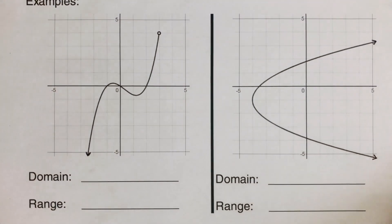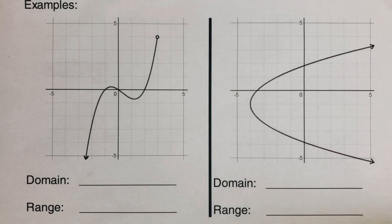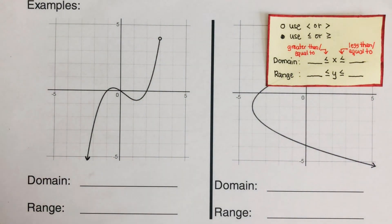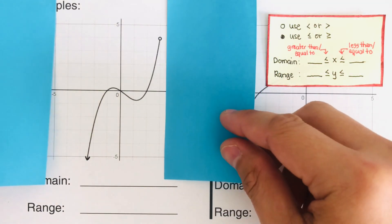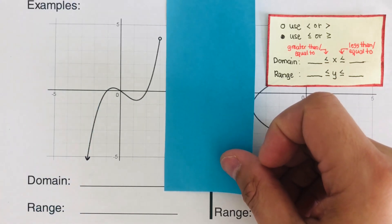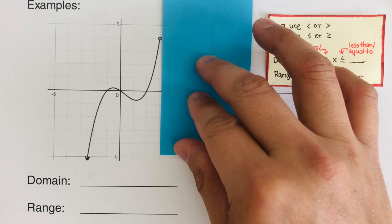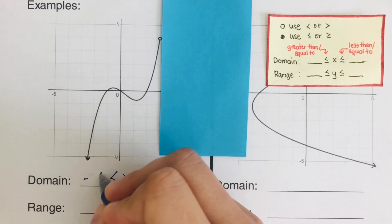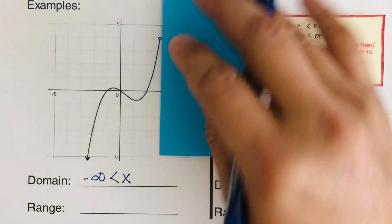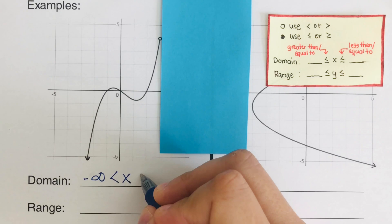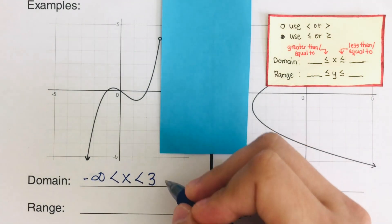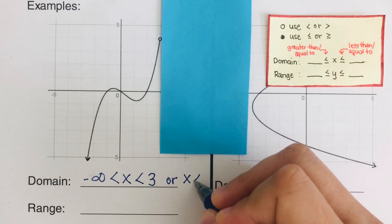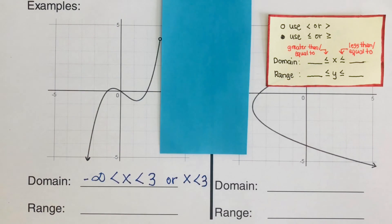Now let's move on to the next example. We have this graph and we need to determine the domain and range. Let's start with the domain — that's left and right. In this case, I cannot put a boundary on the left since it's going forever. So the boundary is only on the right side. Our x here, since this is going forever to the left, would be negative infinity with no bar underneath. And then on the right side, since that's an open circle at three, the domain is: x is greater than negative infinity and less than three. Or we can rewrite this as: all x values less than three.